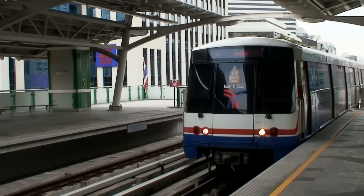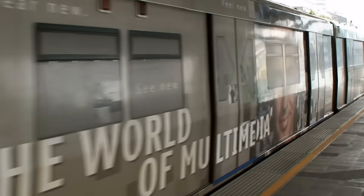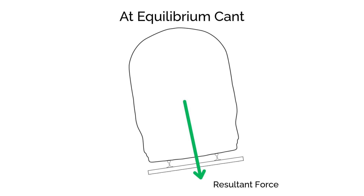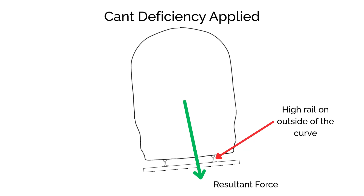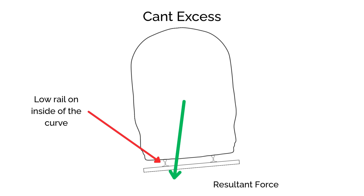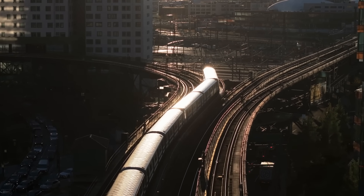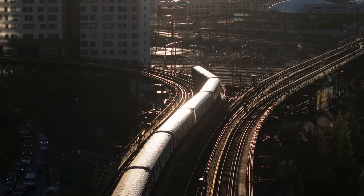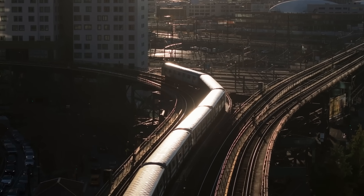The direction of the resultant force determines which rail carries more load. At equilibrium cant, or on flat straight track, both rails take equal loading. When a train operates with cant deficiency, more of that resultant force shifts towards the high rail on the outside of the curve, increasing the force and possibly wear on that rail. If there's a cant excess — too much cant for the speed — the force shifts towards the low rail. These imbalances affect stability, rail wear, and how the bogie steers through the curve.